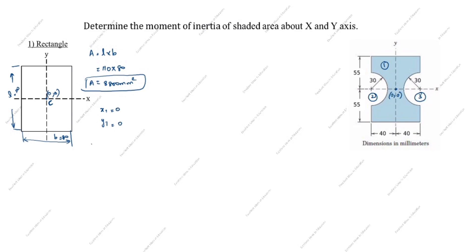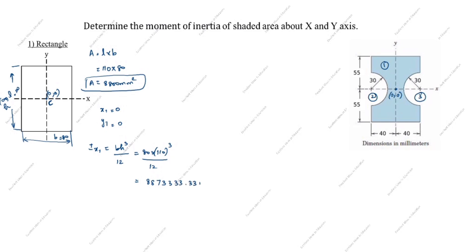The moment of inertia formula for a rectangle about the x-axis is Ix1 = b·h³/12. Here b = 80 and h = 110. So Ix1 = 80 × 110³ / 12 = 8,873,333.33 mm⁴.